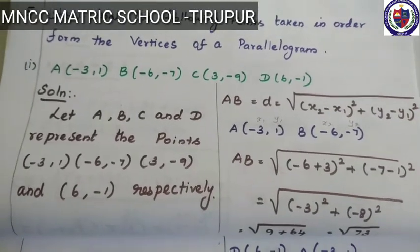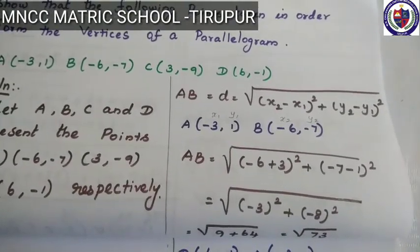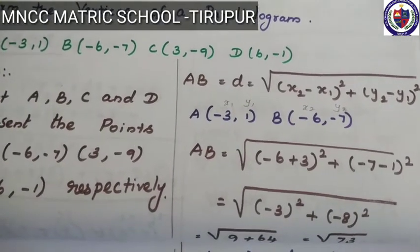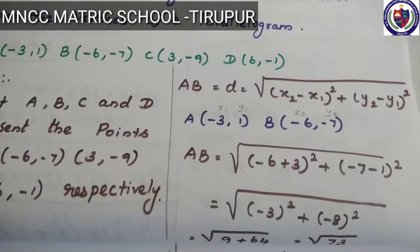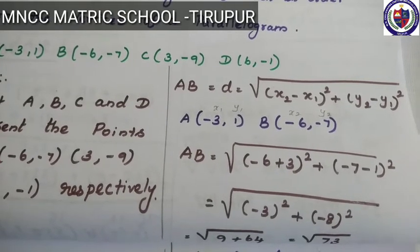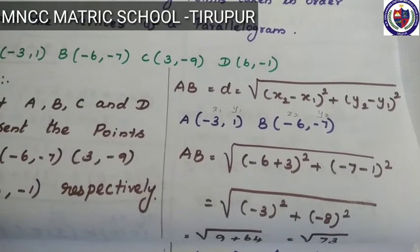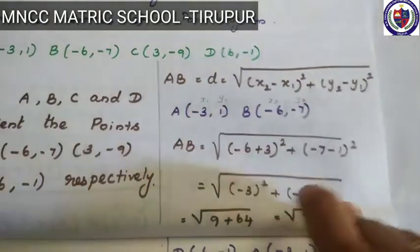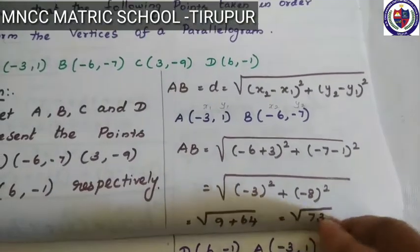First, we take points AB. AB = √[(x2-x1)² + (y2-y1)²]. A is (-3,1) and B is (-6,-7). So AB = √[(-6+3)² + (-7-1)²] = √[(-3)² + (-8)²] = √[9 + 64] = √73.